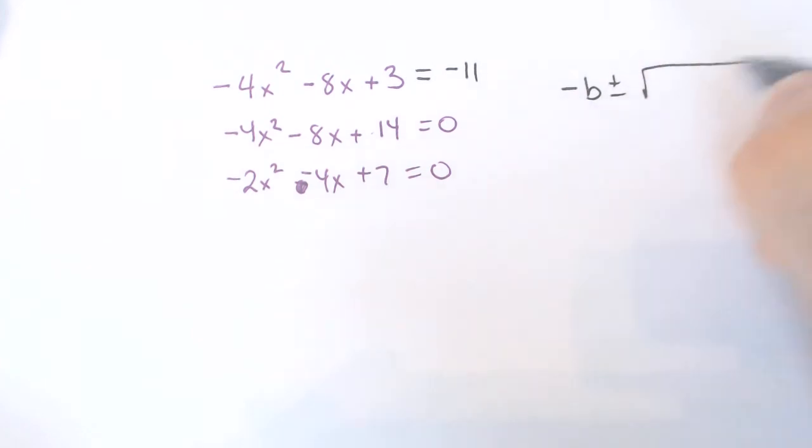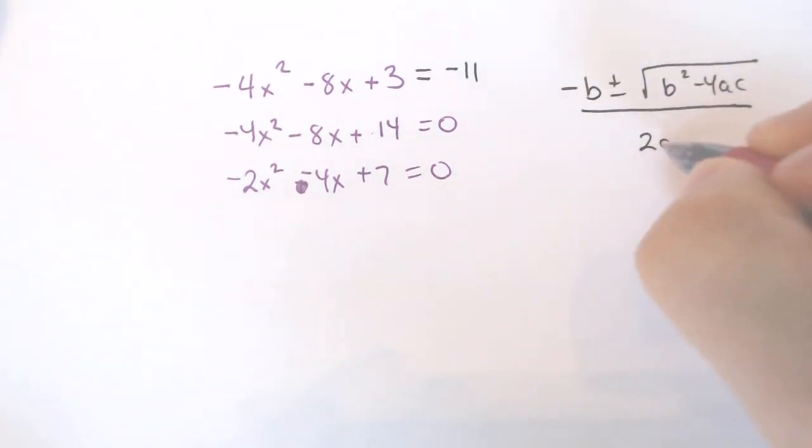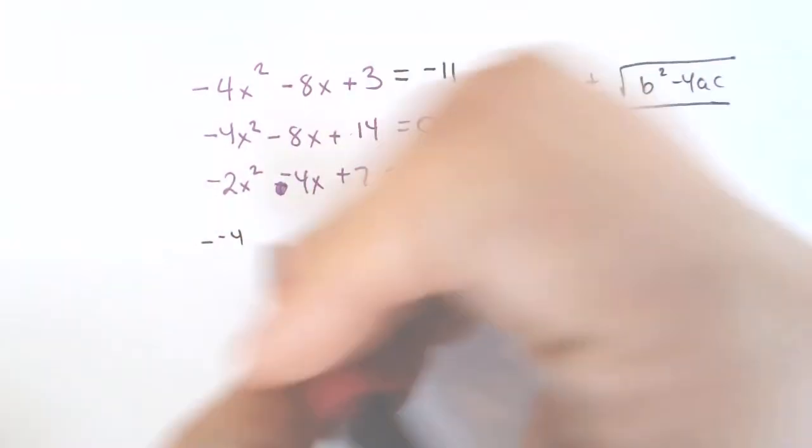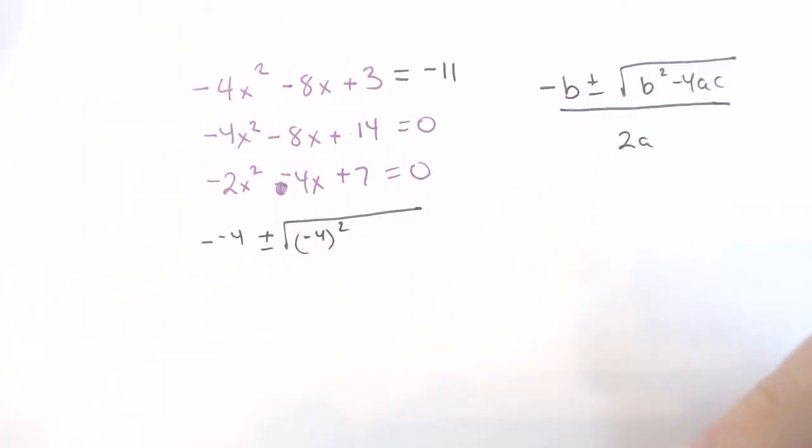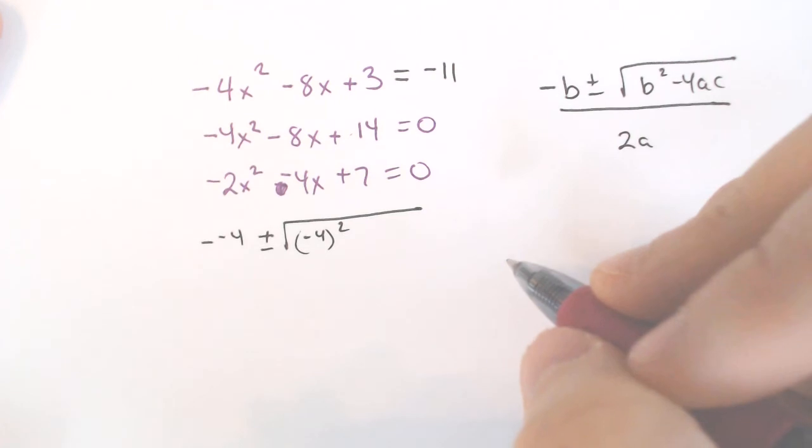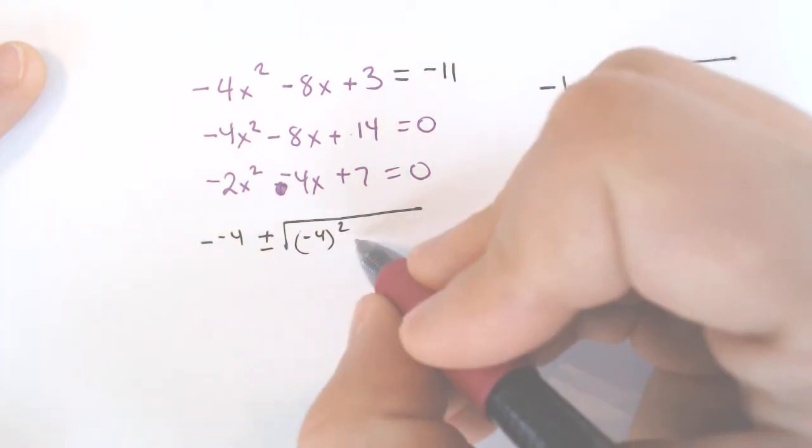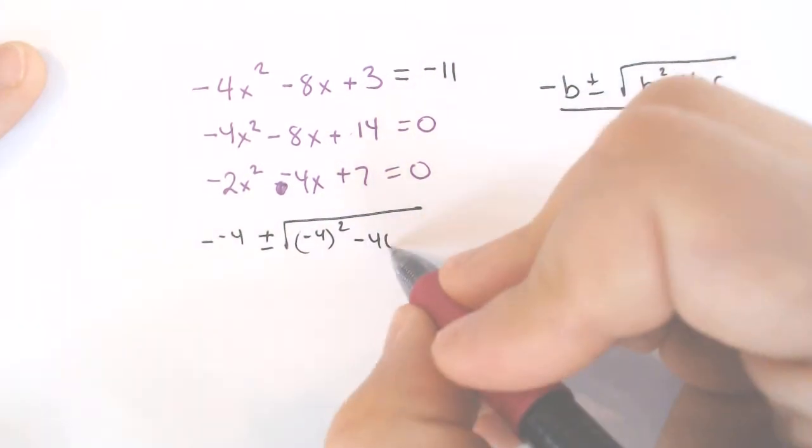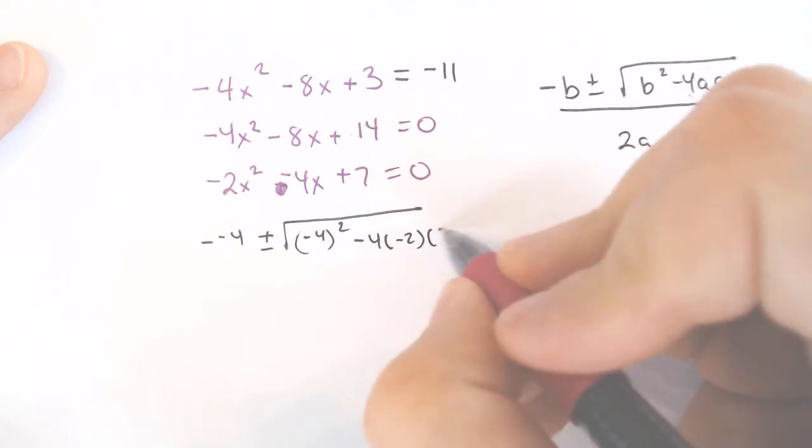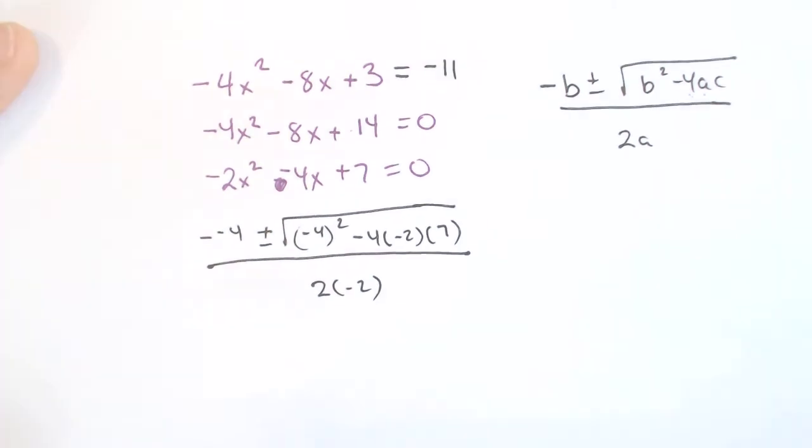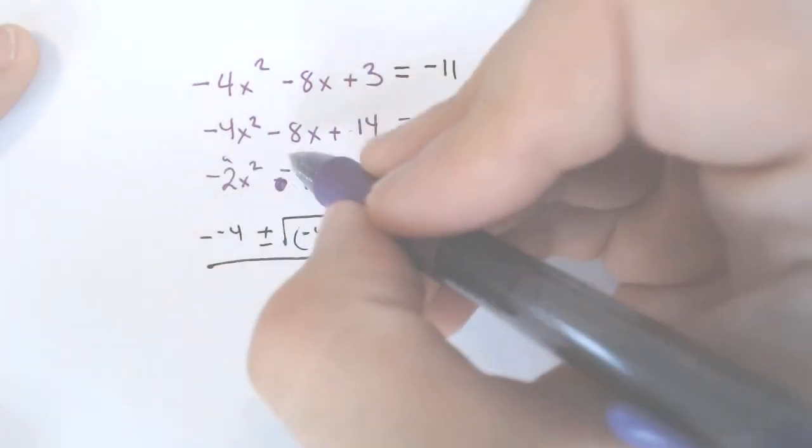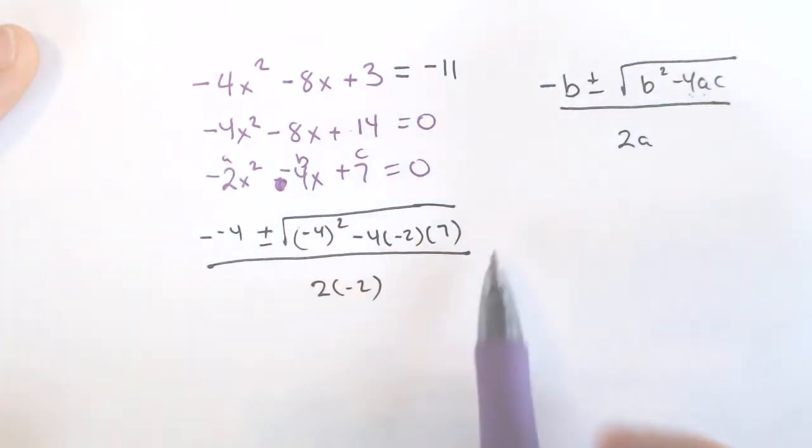Quadratic formula time. Negative b plus or minus b² minus 4ac all over 2a. So negative b would be a negative negative 4, which will turn into positive 4. Negative 4 in parentheses squared is positive 16. If you do not put it in parentheses with your calculator, it will lie to you and tell you it's negative 16 minus 4 times a times c all over 2a. So your a and your b and your c came from right there, and I just plugged them in.